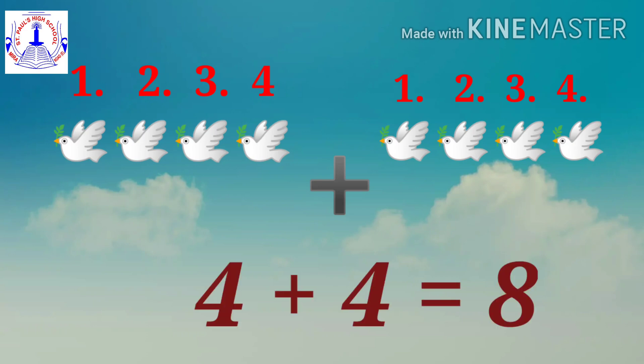Four plus four — let's count: one, two, three, four, five, six, seven, eight. So four plus four gives you eight. Four birds plus four birds give you a total of eight birds.